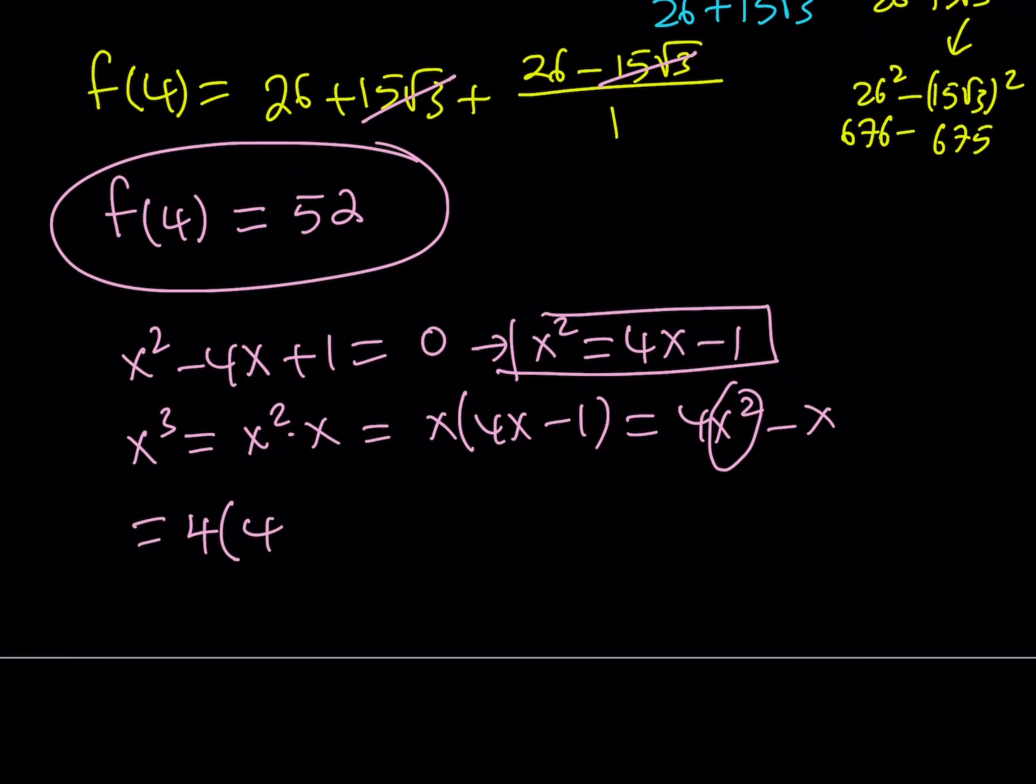That's going to give me 4 times the quantity 4x minus 1 minus x. Again, this is x cubed. And from here I get 16x minus x, which is 15, 15x minus 4. So if I'm able to write x squared as 4x minus 1, then x cubed can be written as 15x minus 4. Let's see what that means.